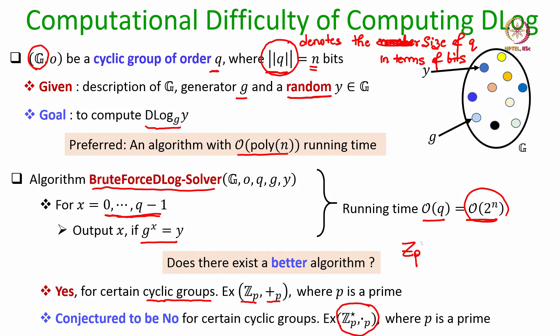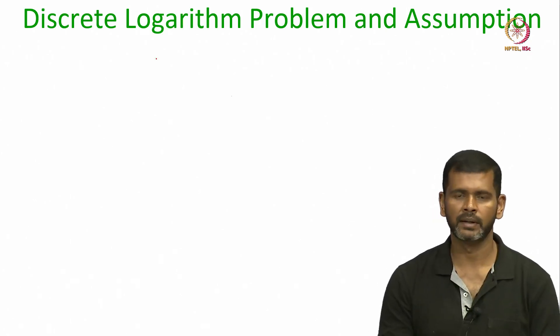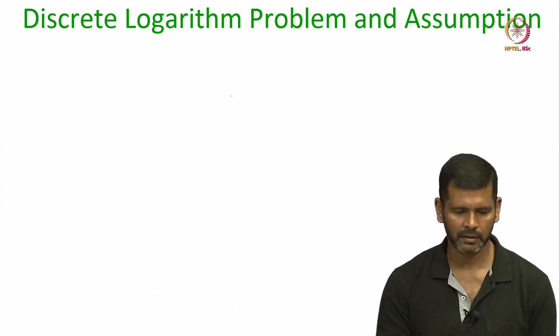The group Z_p* is the set {1, ..., p−1} with multiplication modulo p. There are other better candidate cyclic groups for which it is conjectured that no algorithm exists with running time better than order 2^n. Based on this discussion, we now formulate the discrete logarithm problem and the D-log assumption.